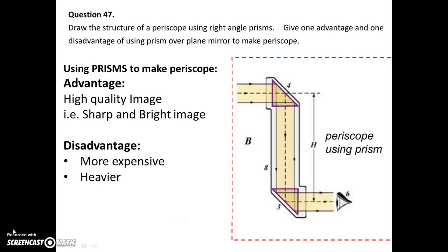And for the disadvantage of a periscope using prism, it would be more expensive and heavier. And so, if you are using mirrors to make periscope, the advantage would be less expensive and lighter. But then the disadvantage would be poor quality image. The image would not be that sharp, would not be that bright if you are using mirrors instead.